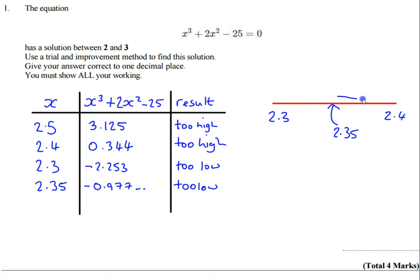And it's going to be between 2.35 and 2.4, which means to one decimal place my answer is going to be closer to 2.4 than it is to 2.3. So I can say that x is approximately equal to 2.4. Hope that makes sense, thanks very much for joining me, I'll see you next time.